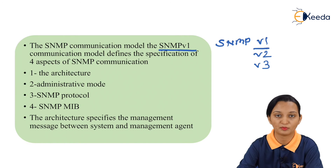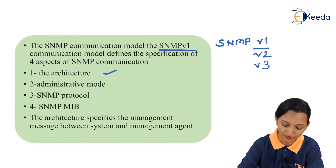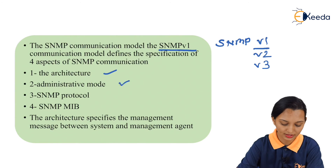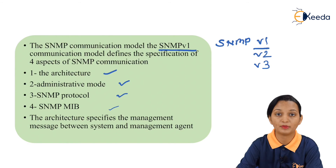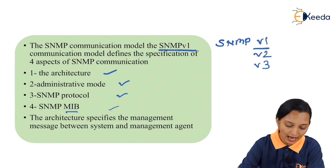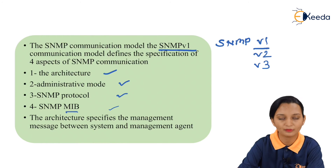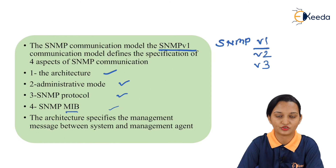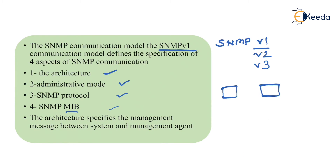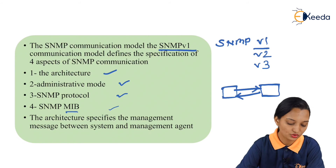There are four aspects of the SNMP V1 communication model. First is the architecture — the basic or fixed architecture defined by SNMP V1. Second is the administrative mode. Third is the SNMP protocol. Fourth is the SNMP MIB — MIB is nothing but the Management Information Base, which is a database. The architecture specifies the management messages between the system and the management agent — that means the generation and flow of messages between the sender and the receiver.